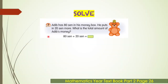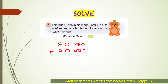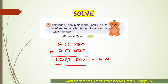Look at question seven. Adib has 80 cents in his money box. He puts in 20 cents more. What is the total amount of Adib's money? The number sentence is: 80 cents plus 20 cents. Rewrite in standard written method: 80 cents plus 20 cents. 0 plus 0 is 0, 8 plus 2 is 10, so the answer is 100 cents. And 100 cents is equal to one ringgit. So the total amount of Adib's money is one ringgit.